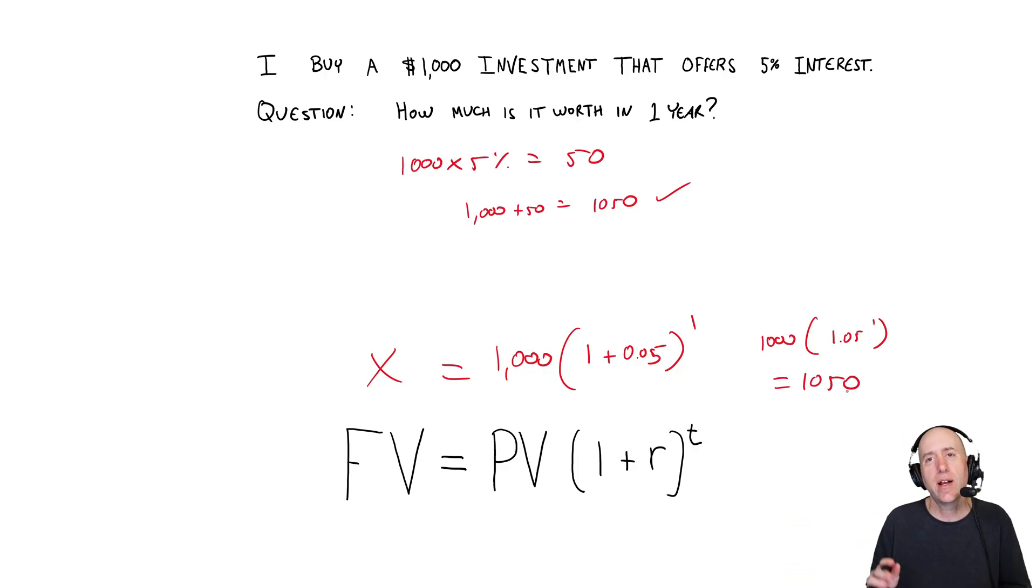Again, we wouldn't likely use a formula like this for a one-year annuity. But if I want to do 10 years, real easy, right? You just put the exponent to 10. In fact, why don't we just for fun go out to 10 years? So X equals 1,000 times 1.05 to the 10th power.